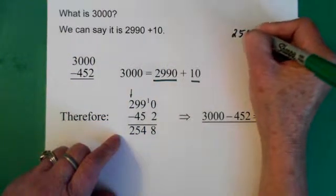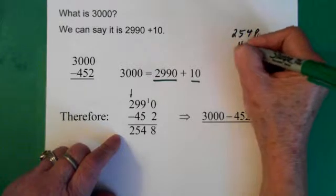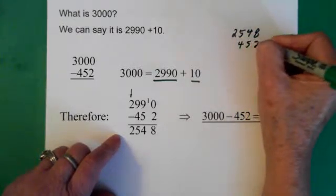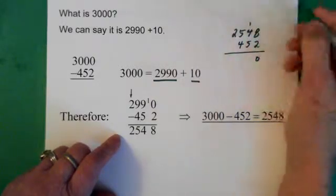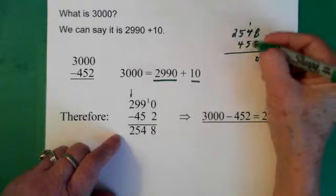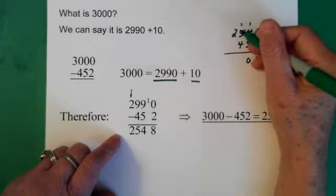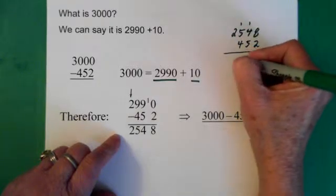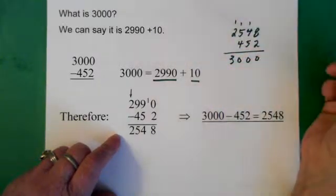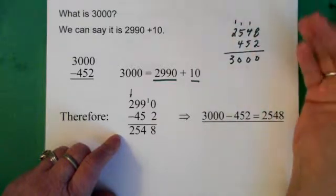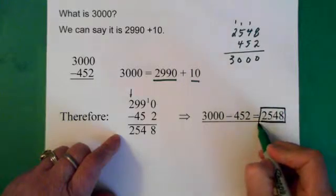So, 2,548 added to 452. 8 and 2 is 10, 0 carry the 1. 9 plus 1 is 10, 0 carry the 1. Again, 9 plus 1 is 10, 0 carry the 1. And here we have 3. So then it does work, and this would be the answer.